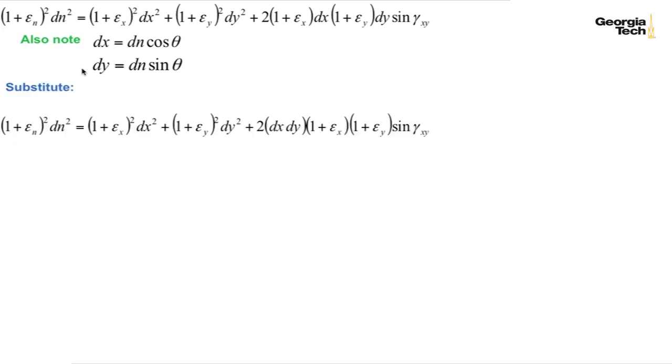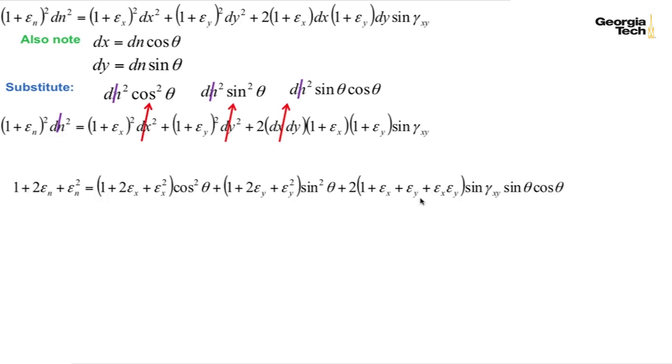So here's the relationship that we have developed along with dx and dy. We're going to go ahead and substitute those in. And I have dx squared, dy squared, and dx times dy. I can now cancel dn squared out of every term. And I end up with this relationship.